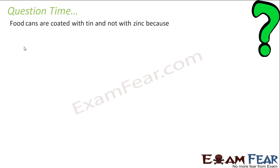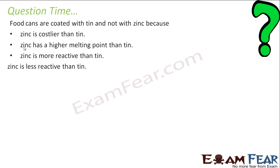Food cans are coated with tin, not zinc. Why? Because you have the given four options. Zinc is costly than tin. Zinc has a higher melting point than tin. Zinc is more reactive than tin. And zinc is less reactive. The answer is obviously zinc is more reactive than tin. That is why it is coated with tin, not zinc. So this is the answer. Why? Since tin is less reactive and zinc is more reactive, so it is coated with tin, not zinc. Since zinc is more reactive, it is not coated with zinc. Tin is less reactive, it is coated with tin.